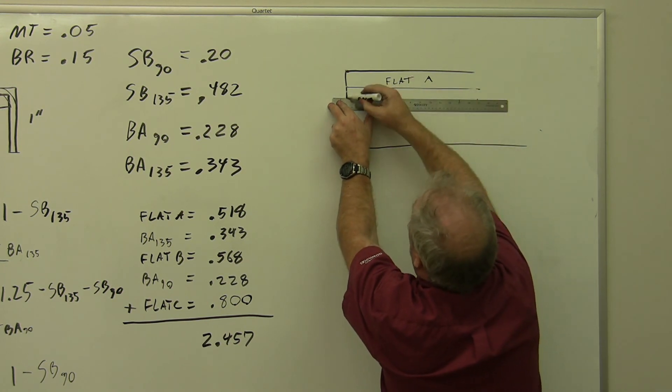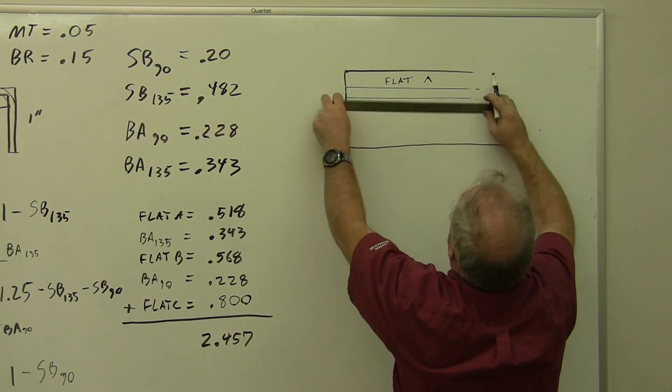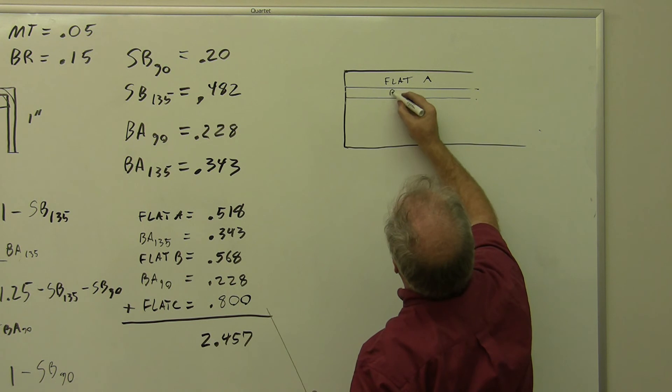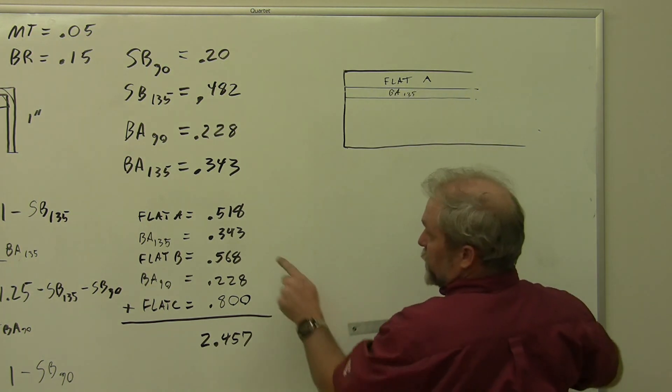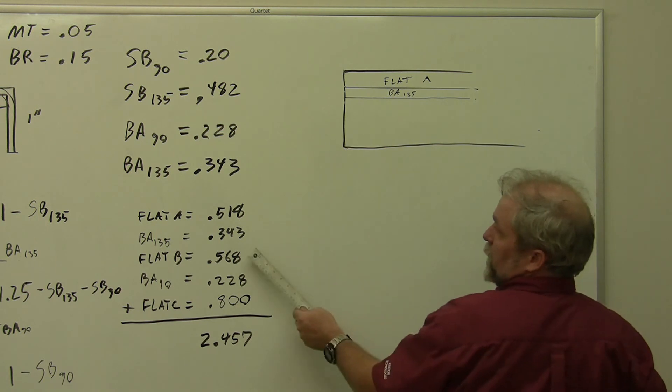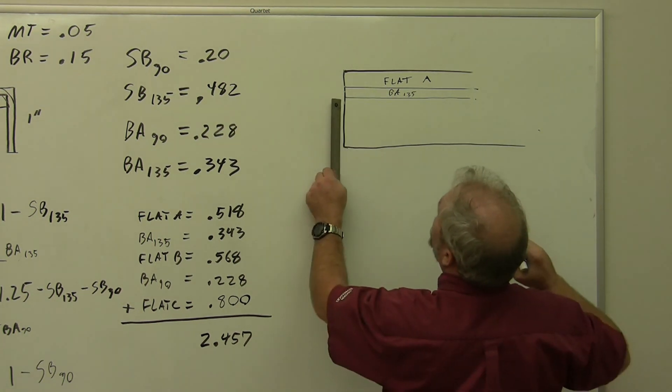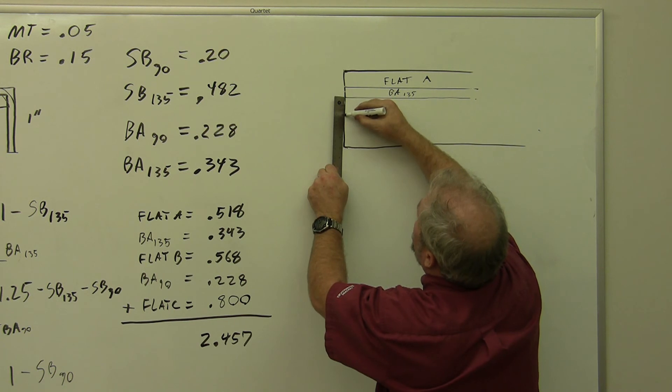And this is our BA 135. Now we've got our one and a half and three sixteenths right here.